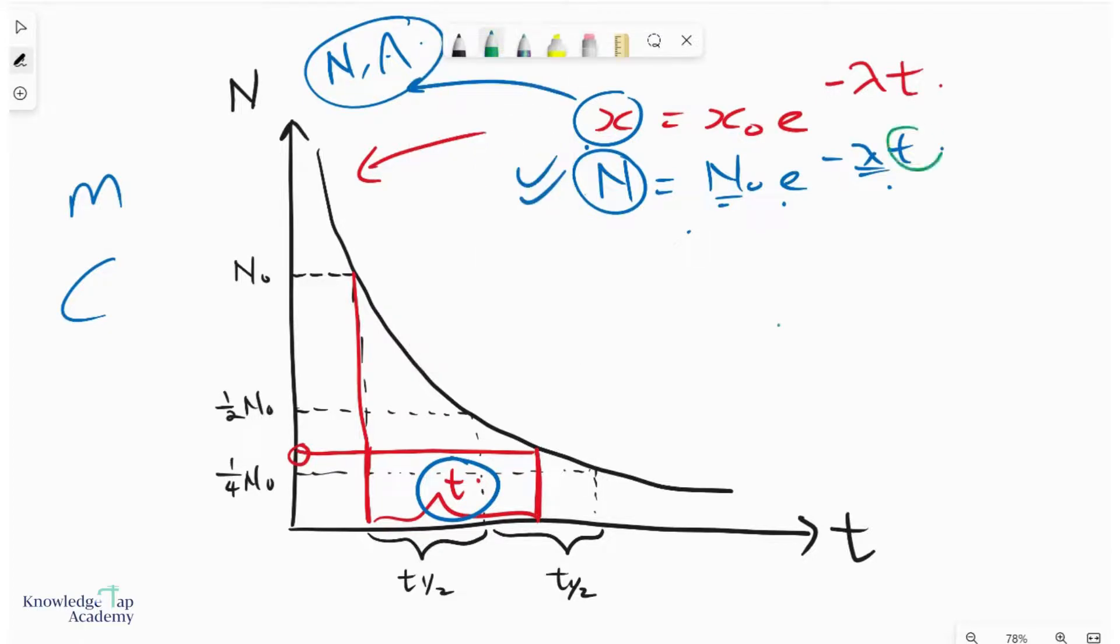And so if we let t equal to the half-life, and of course, N over here will simply be N₀ over 2, half of what we are looking at.